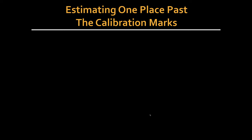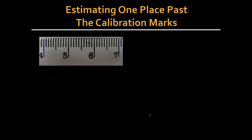So estimating one place past the calibration marks, what does that look like? Well, in this particular device, it's marked to the nearest tenth of a centimeter. So you would estimate one place smaller than that, which would be to the hundredths of a centimeter. So this line right here is definitely six point something. It's between six and seven.